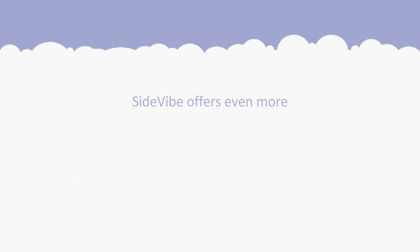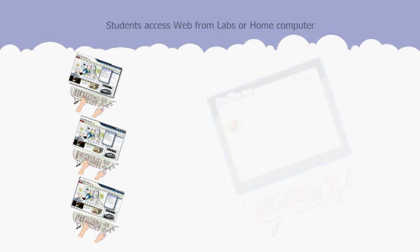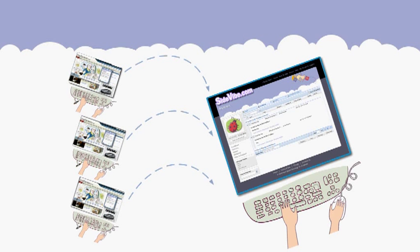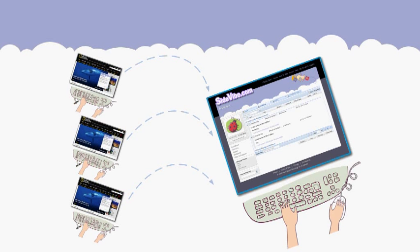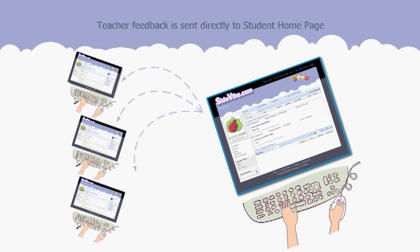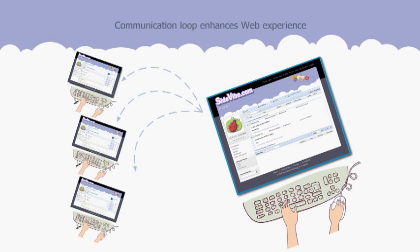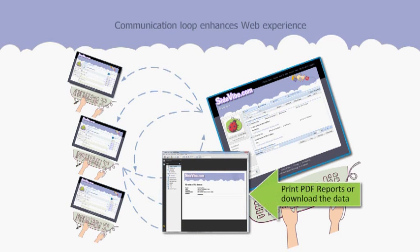Sidevibe offers you even more. As students traverse web content, their interactions are stored at your Sidevibe home page. Since Sidevibe is on the web, you can provide feedback to students anytime, and students will see your feedback clearly displayed on their home pages. Now you can offer timely and abundant comments, guidance and assessments to individuals and groups whenever you like. Using this communication loop uniquely enhances everyone's online experience.